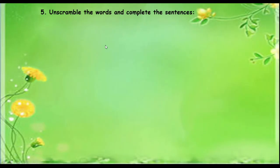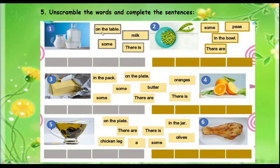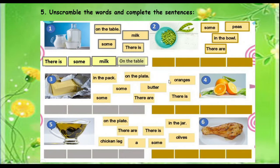The next exercise: unscramble the words and complete the sentences. For example, number one — the words are: on the table, some milk, and there is. The answer is: there is some milk on the table. Do the same with numbers two through six.